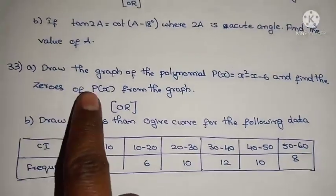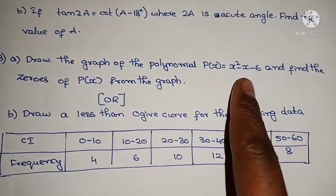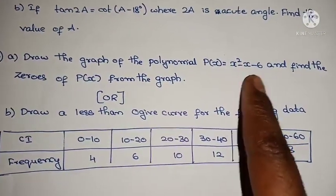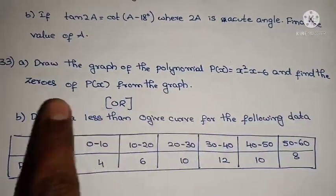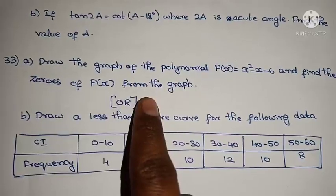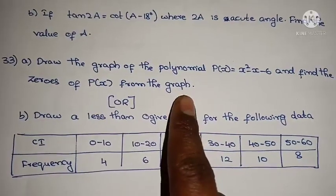Part A: Draw the graph of the polynomial P(x) = x² - x - 6, and find the zeros of P(x) from the graph.